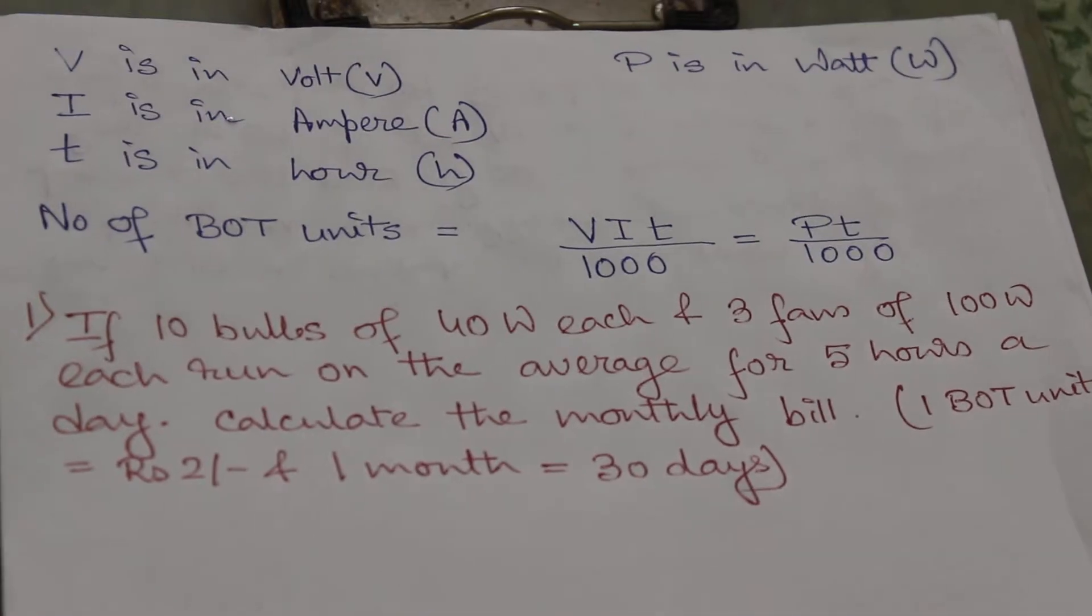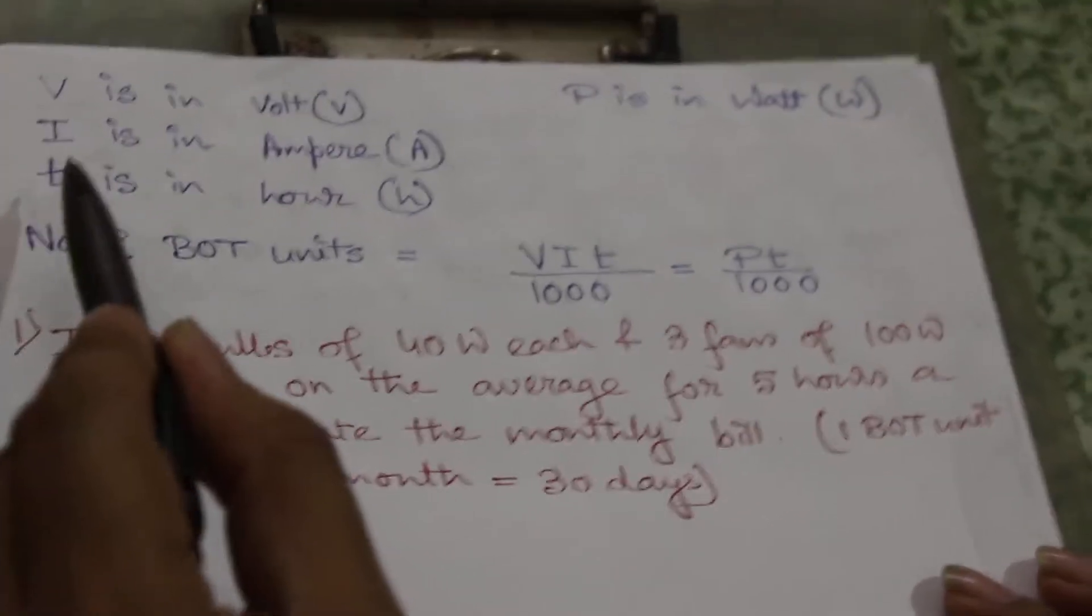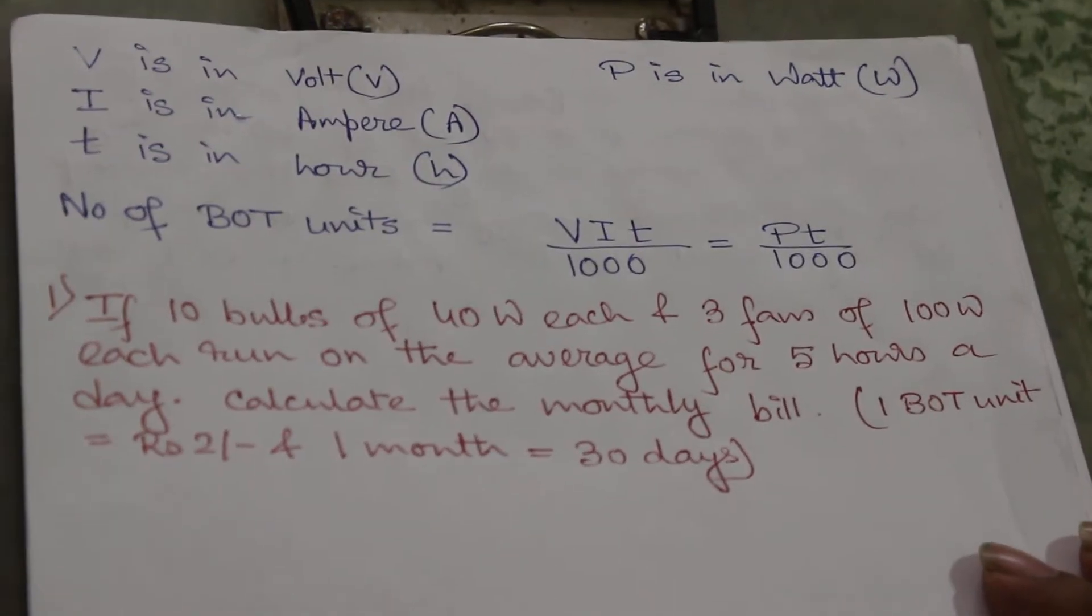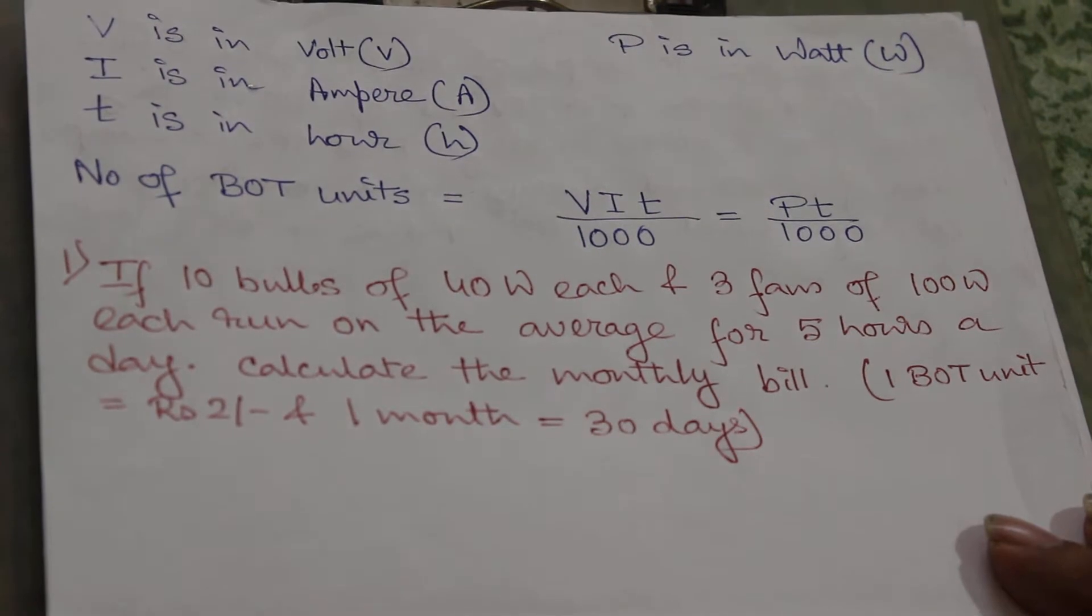First of all, we have to take voltage in volt unit, current in ampere, and T in hour. And power, which will be equal to V into I, should be in watt.